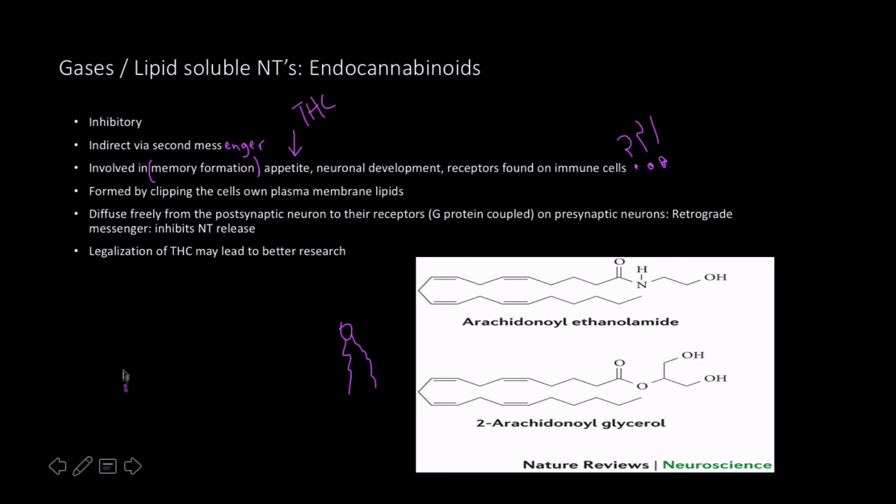So there's that. There's another one. So this would be the presynaptic neuron, this would be the postsynaptic neuron. Like other lipid soluble neurotransmitters, it diffuses freely from the postsynaptic neuron to the receptors, G protein coupled, on the presynaptic neurons. It's a retrograde messenger that inhibits neurotransmitter release. So once this guy receives too many neurotransmitters it's going to send endocannabinoids from here to here saying hey man stop sending me neurotransmitters.